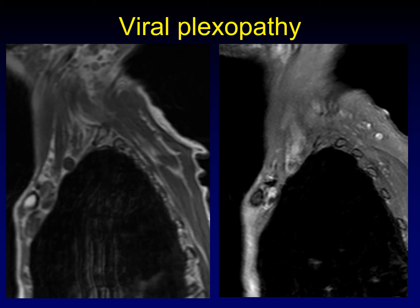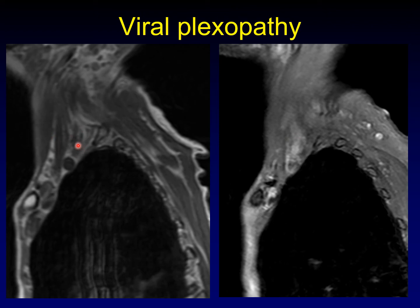Infectious brachial plexopathy is a rare entity. You can see the anterior scalene muscle, and in the scalene triangle, the trunks of the brachial plexus — maybe a little hazy and thickened, but not really striking on unenhanced images. When we move to post-contrast images, there is a striking amount of abnormal enhancement. You know right where to look because of those T1-weighted images, and on post-contrast you find extensive enhancement of the brachial plexus. This happens to be VZV infection of the brachial plexus in an immunocompromised patient.